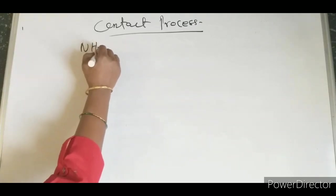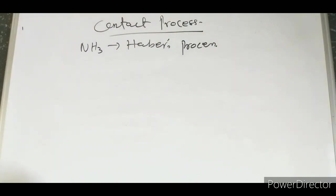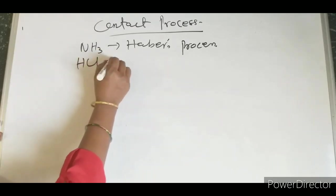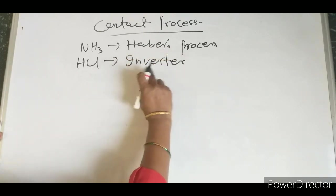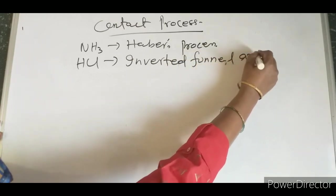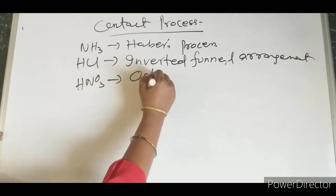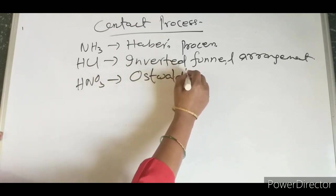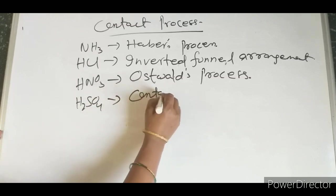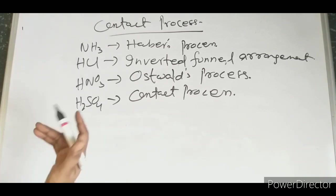Let me write these again clearly — this is a board exam question. Ammonia: Haber Process. HCl: inverted funnel arrangement. HNO3: Ostwald Process. H2SO4: Contact Process. Remember this table; sometimes the product is given and you must name the process, or the process is given and you identify the catalyst or product.